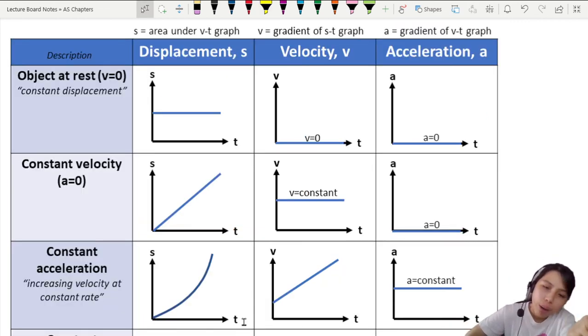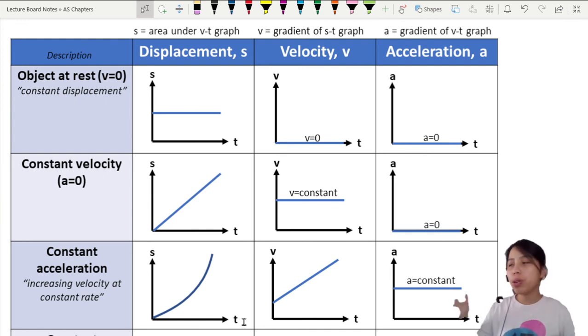So those are some of the examples that may come out. I will highly encourage you to try more past paper questions because it's not good to memorize. It's good to practice analyzing different shapes, curves of graph. And part of your revision, if you want to summarize things, you could draw a table like this one, where you have object at rest, object at constant velocity, constant acceleration, and you draw the displacement velocity acceleration graph. You can use this to check your answer and see whether you got them correct based on the statement.